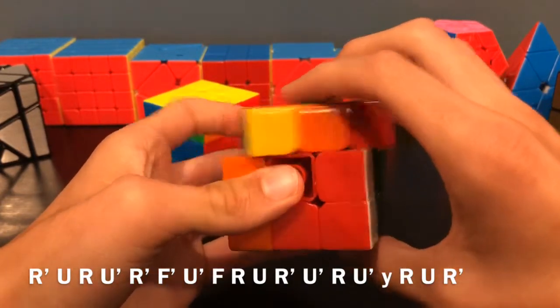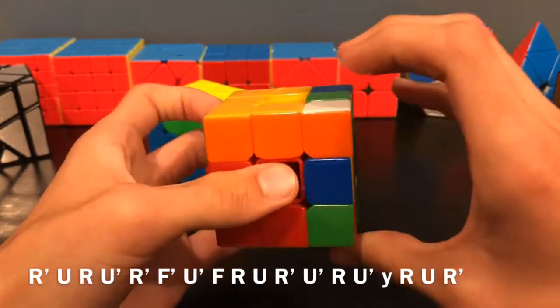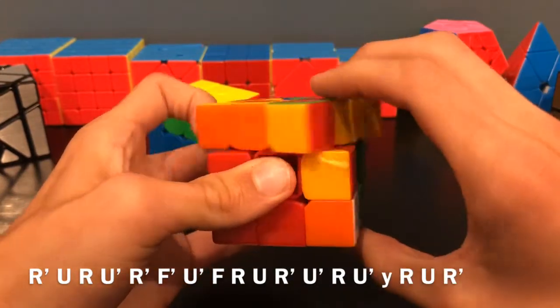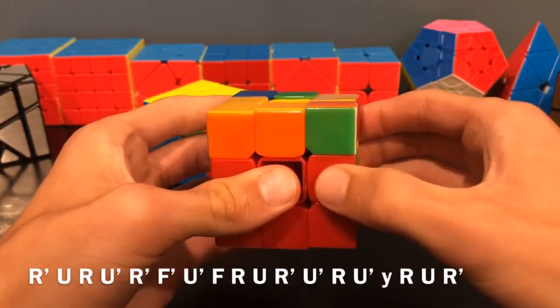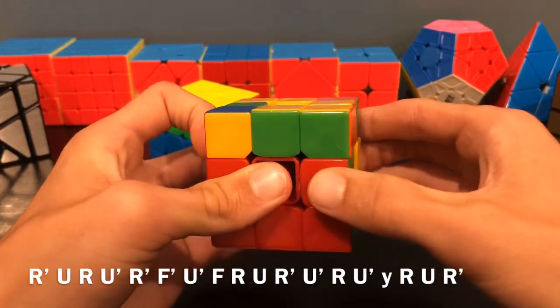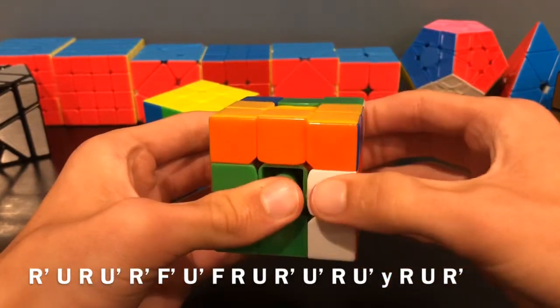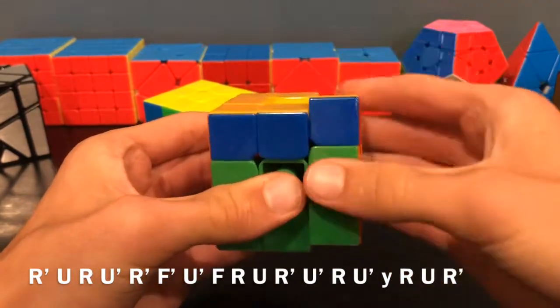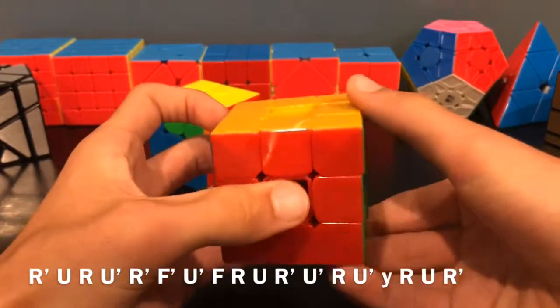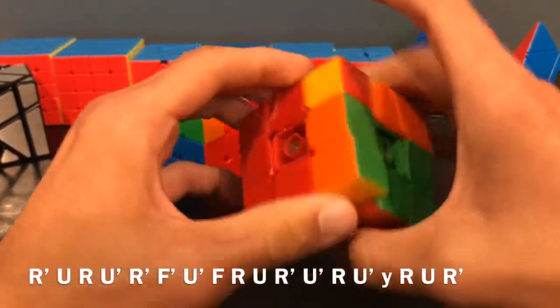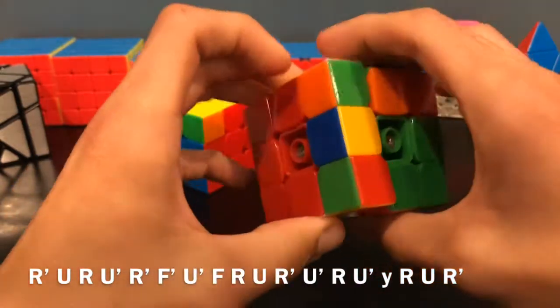F prime F R U R prime U prime R, then you'll do U prime and then this cube turn here: R U R prime. In review, it's this, and then you sort of take this pair out, even though it's not an F2L pair.